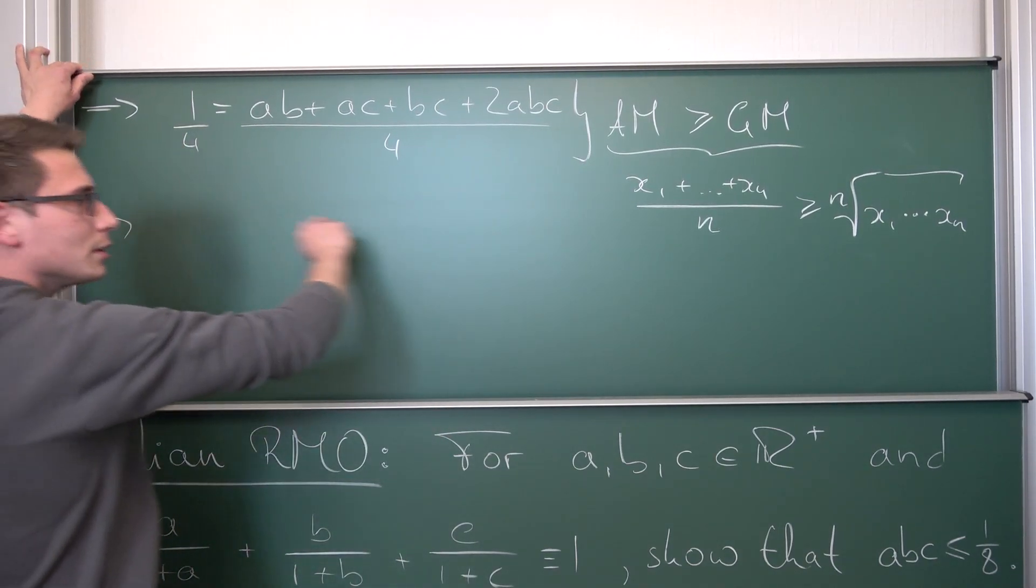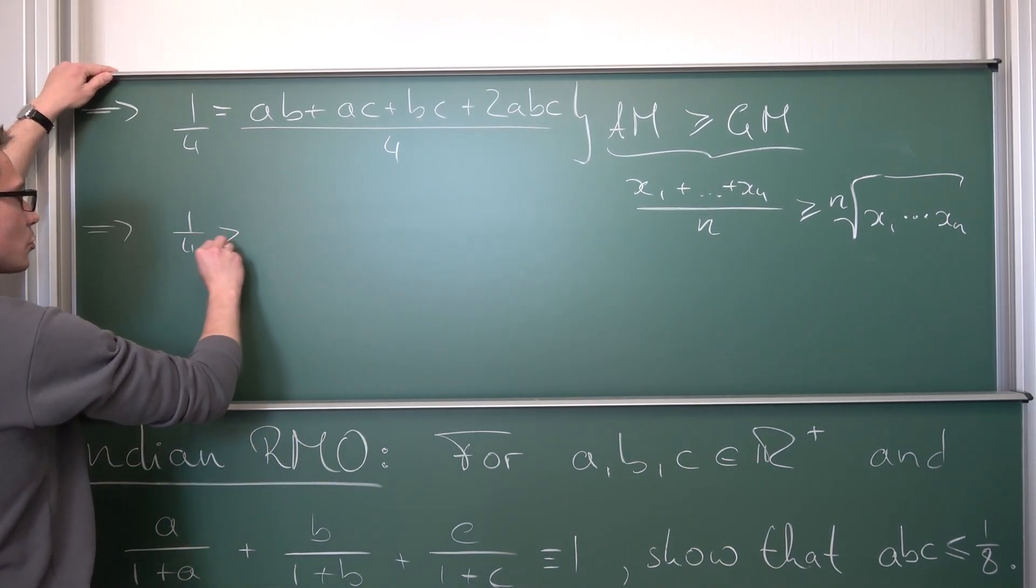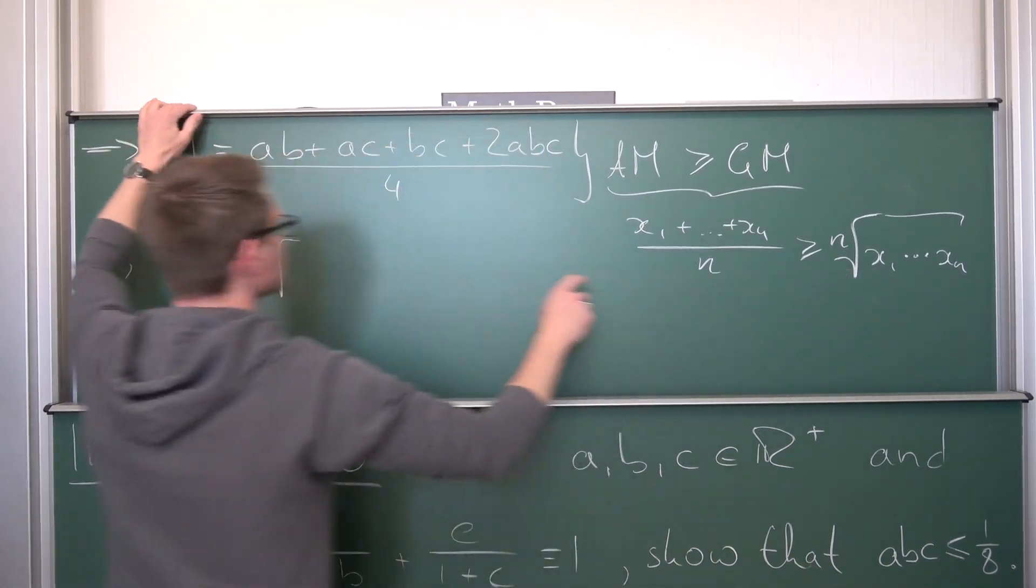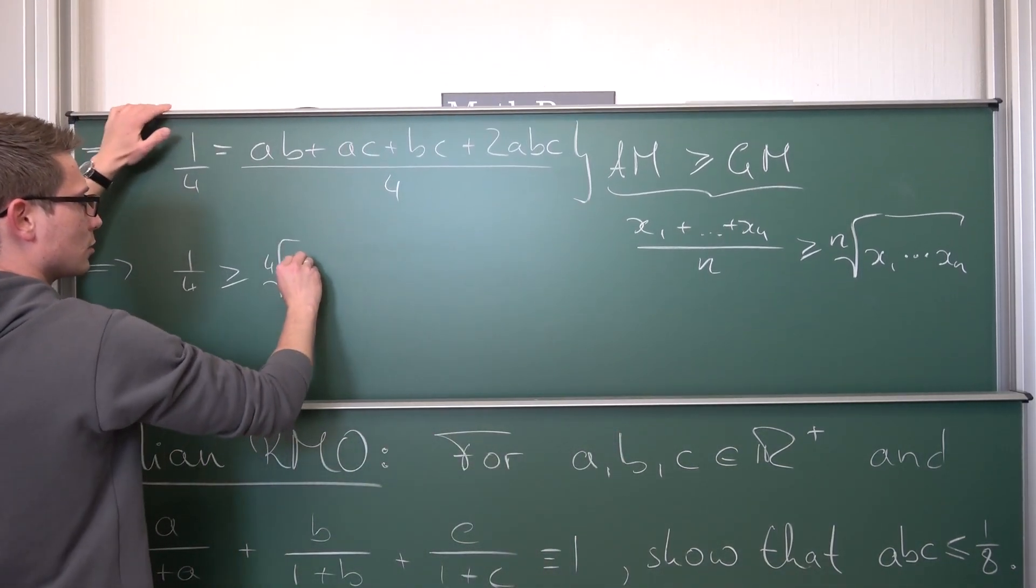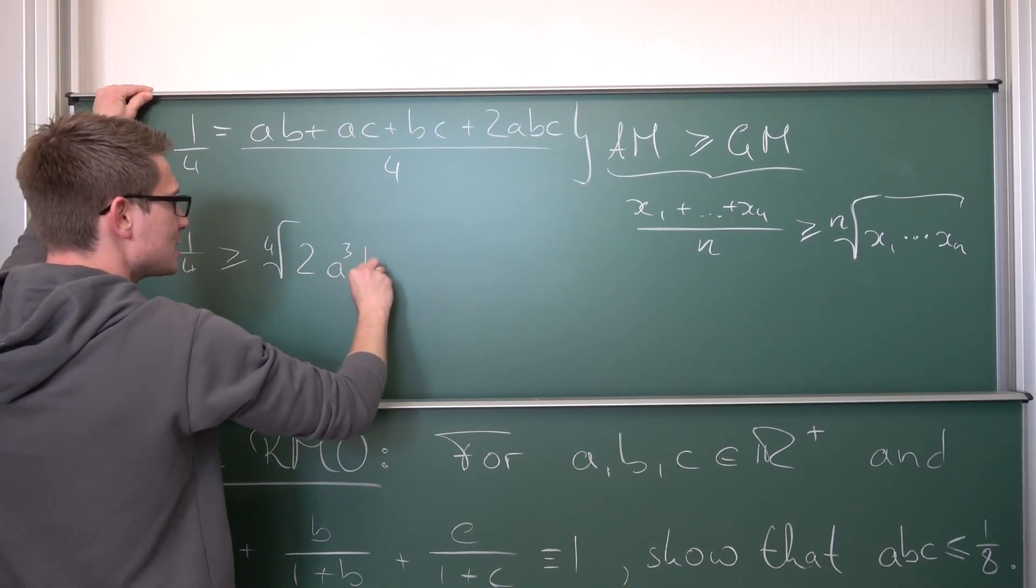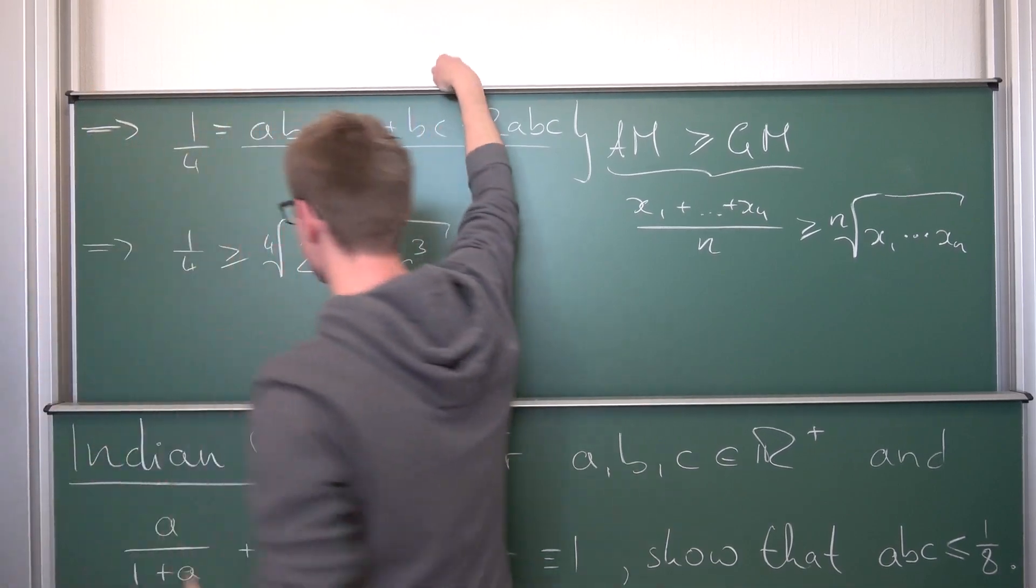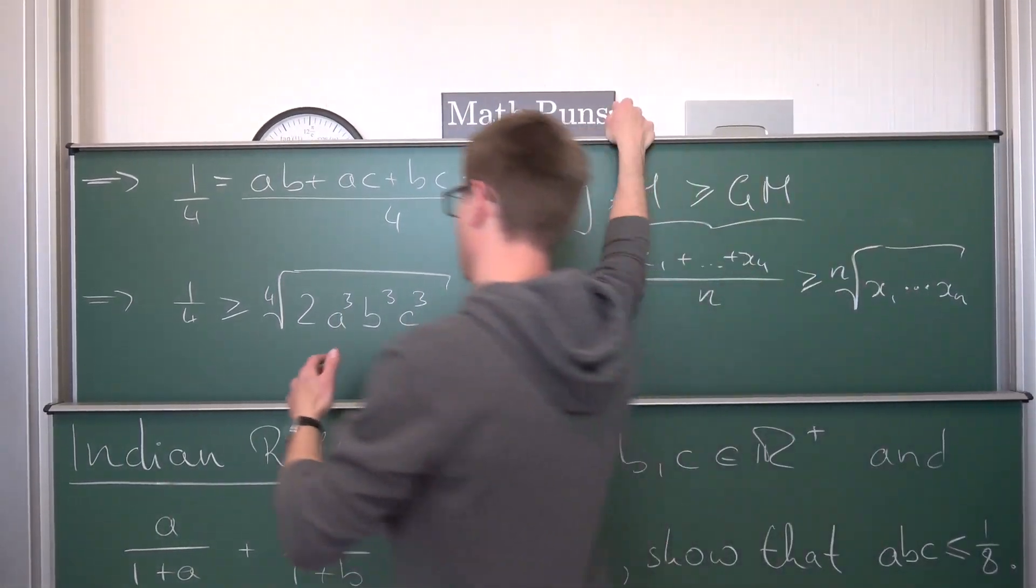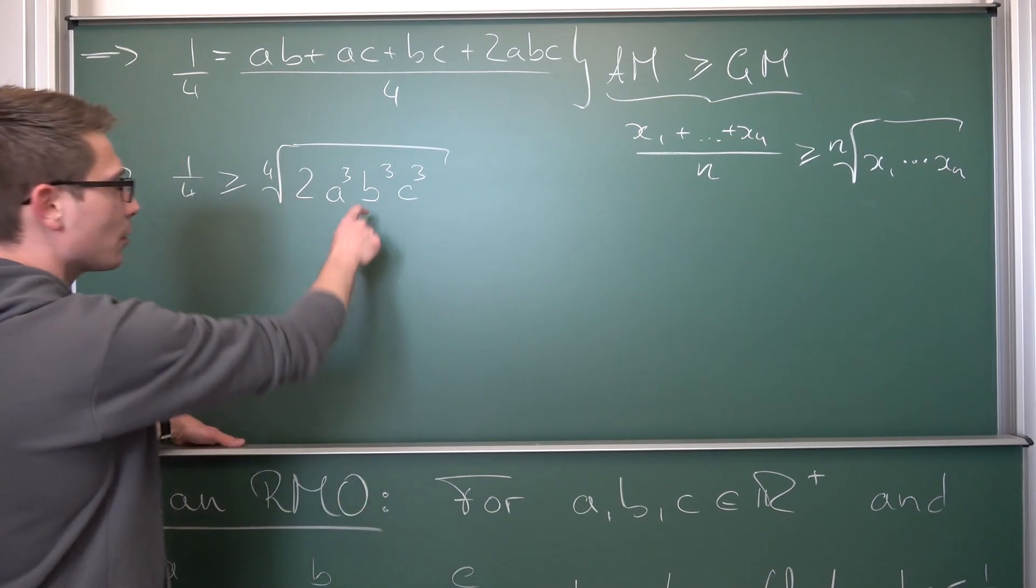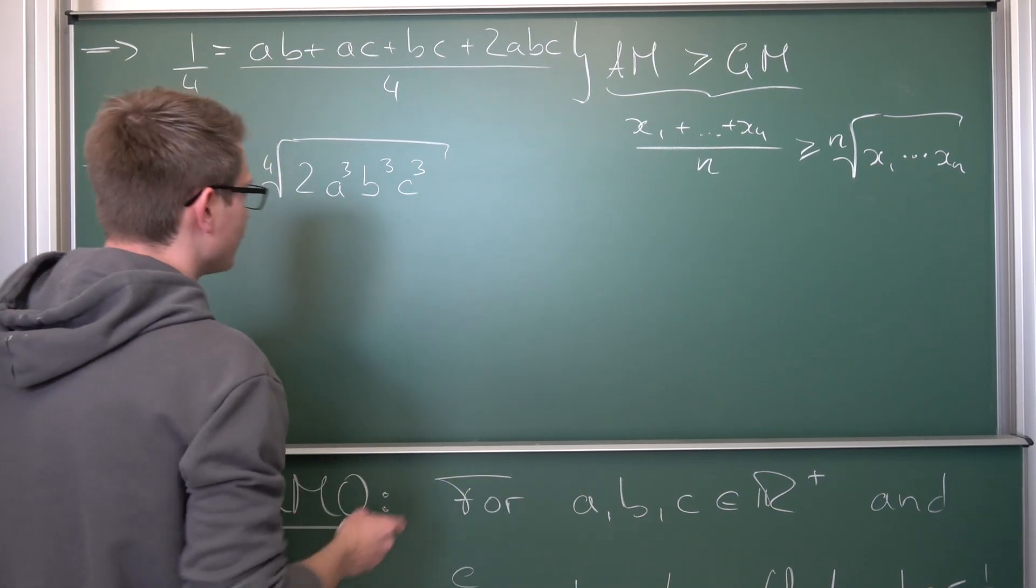And now we can use it on what we got here. Our AM is going to be 1/4. Obviously, this is our arithmetic mean by our equation and this is greater or equal to the fourth root of our samples multiplied together. If we multiply this together, we are going to get 2 as a factor and a to the third power, b to the third power times c to the third power. And now we can simply solve for abc.